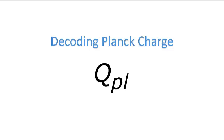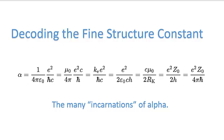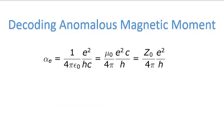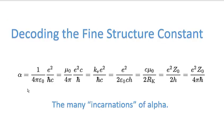Today we're going to be talking about Planck charge — this video is called 'Decoding Planck Charge.' In the previous video, called 'Decoding the Fine Structure Constant,' I was able to simplify a fairly complex set of terms associated with the fine structure constant, and I ended up decoding the anomalous magnetic moment, which is alpha divided by 2π.